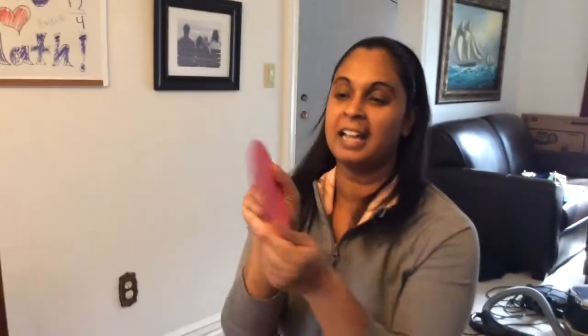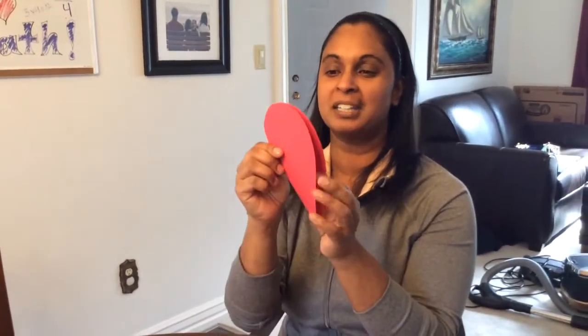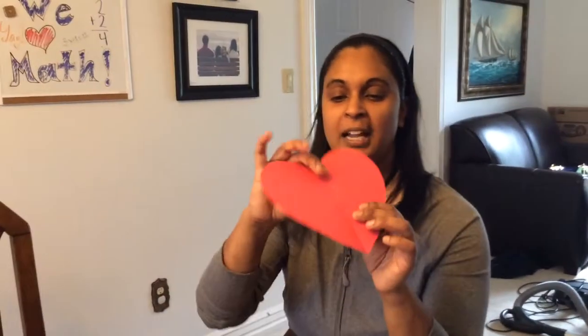Here's a good one — this is a heart shape. If I fold it vertically this way, I can see that I have matching parts. So this heart is symmetrical; it has one line of symmetry right here.